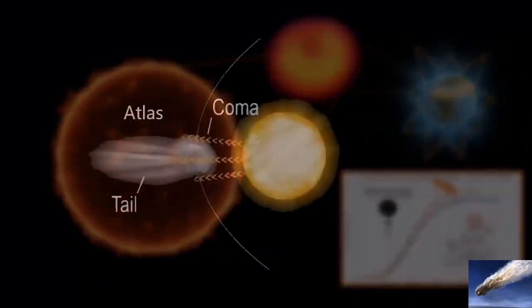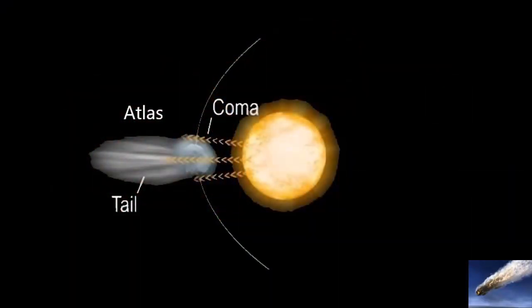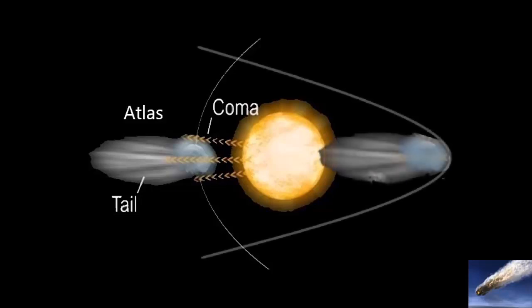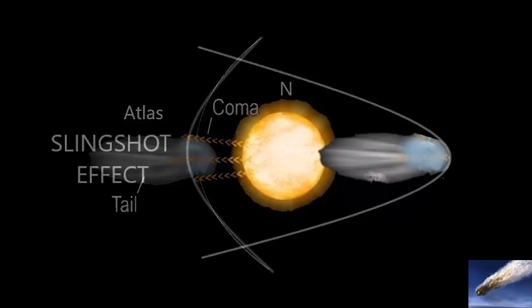The mutual attraction between the Sun and a giant object, in this case Comet Atlas, would increase the speed or the velocity of the object in a manner in which it is catapulted away from the Sun, in a process known as a slingshot effect.